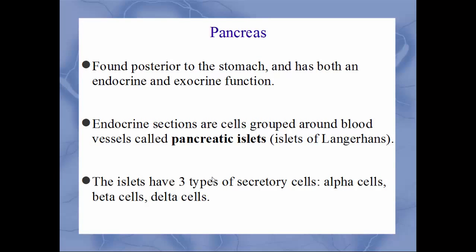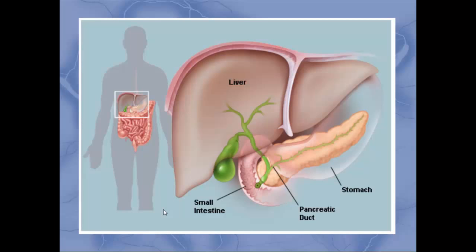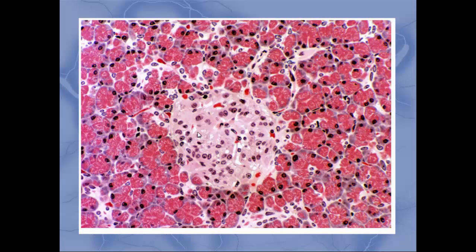The pancreas has a dual function: endocrine and exocrine. We'll cover the exocrine function when we reach the digestive system. The endocrine sections are grouped in cells called pancreatic islets, formally the islets of Langerhans. These islets contain three cell types — alpha cells, beta cells, and delta cells — each secreting something different. The pancreas sits behind the stomach, with islets appearing lighter than surrounding tissue in histological slides.